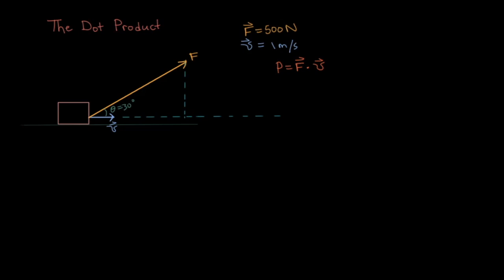We have someone pulling a box at a force of 500 newtons, 30 degrees above the ground. And he's pulling that box at a speed of 1 meter per second. What we want to know is, how powerfully is he pulling the box? Calculating the power is the simple case of F dot v. In other words, v times the parallel component of F.